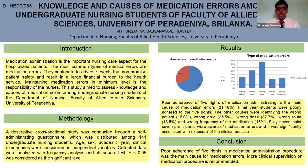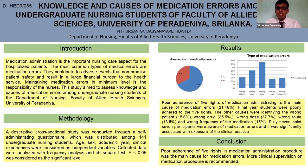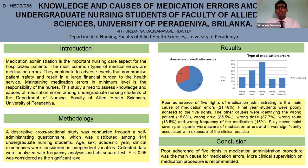The results of the study: awareness of medication errors is shown in the pie chart. Nearly 68% of the participants were aware of medication errors, and failure to account for the five rights of medication administration is the main cause of medication errors. Most medication errors are caused by wrong dosage of medication, and the least are caused by wrong route of medication administration. Medication errors are significantly associated with the exposure to clinical practice.